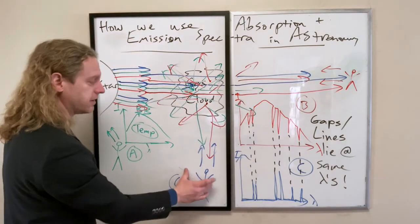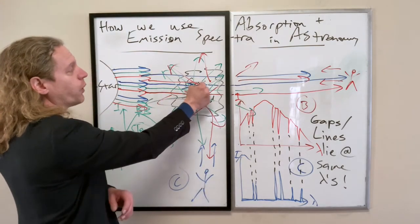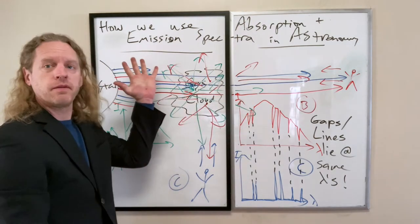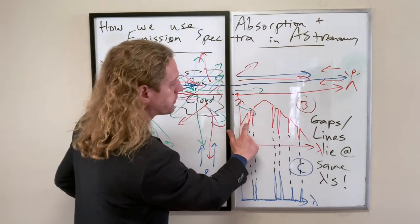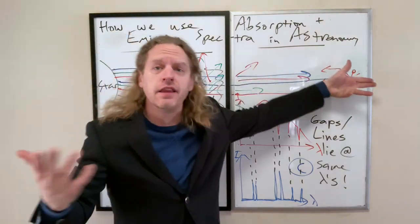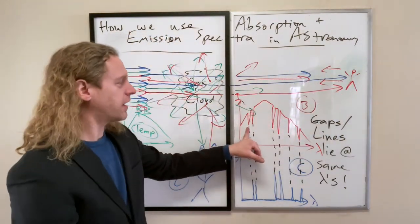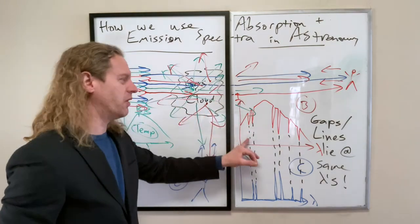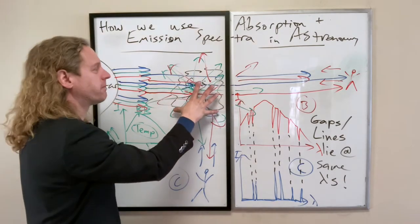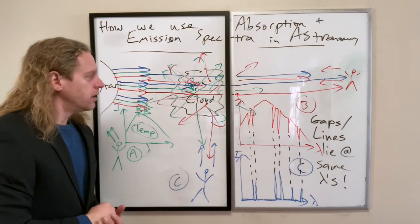That's why observer C sees an emission spectrum — only those specific wavelengths that the gas cloud absorbed and randomly re-emitted. And that's also why the absorption gaps in observer B's spectrum don't go all the way down to zero, because many of those wavelengths get randomly re-emitted in observer B's direction as well. A very deep absorption line means it was absorbed by nearly every atom in the cloud.